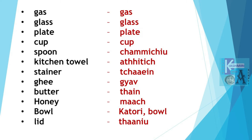Like gas, glass, plate, cup — these are borrowed words. And then there are others where you have specific Kashmiri words: spoon is Chamcha. Kitchen Towel is Athats. Athats. Strainer is Chhaan. Chhaan. Ghee is Gyao. Gyao.